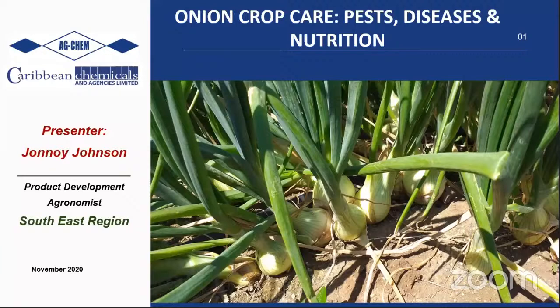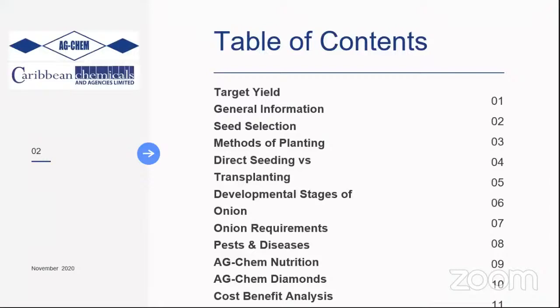This presentation focuses on pests, diseases, and nutrition for onion production. Topics covered today include target yield, general information on onions, seed selection, methods of planting — direct seeding versus transplant — developmental stages, onion requirements, pests and diseases, nutrition, a special feature on the Agchem diamonds program, and cost-benefit analysis.